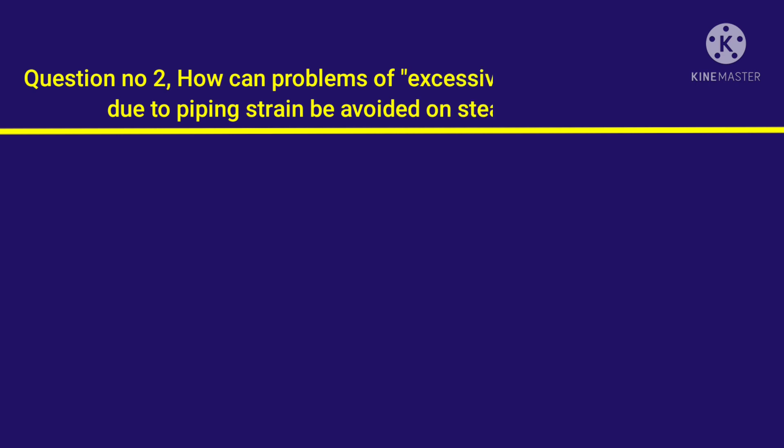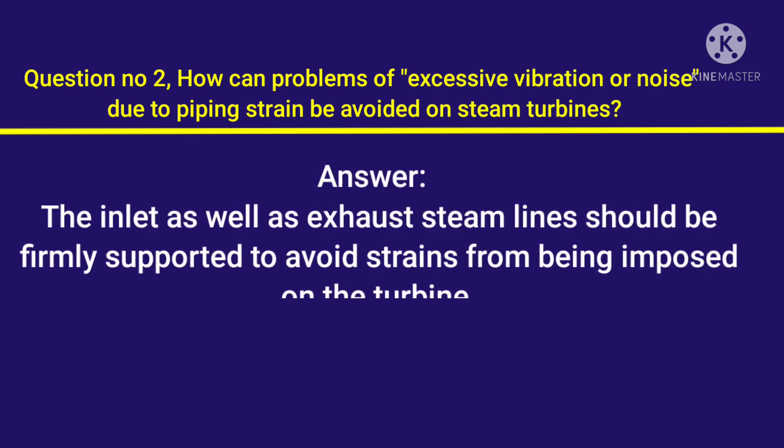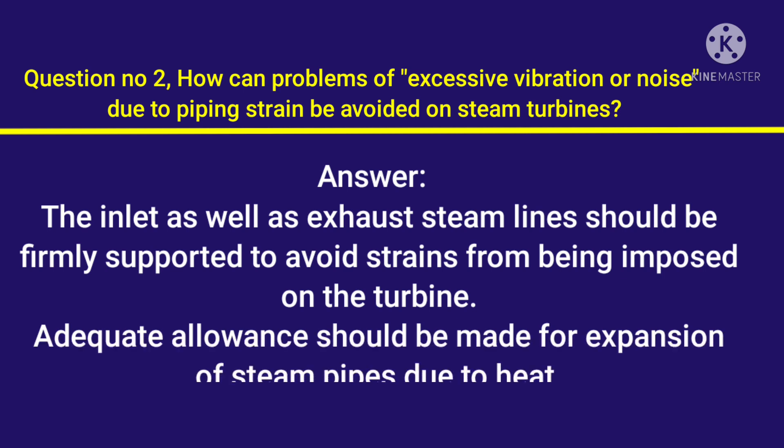Question number 2: How can problems of excessive vibration or noise due to piping strain be avoided on steam turbines? Answer: The inlet as well as exhaust steam lines should be firmly supported to avoid strains being imposed on the turbine. Adequate allowance should be made for expansion of steam pipes due to heat.